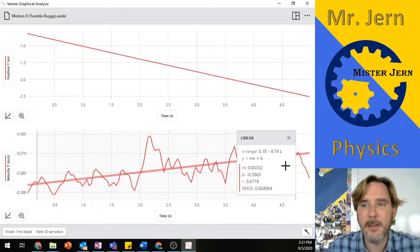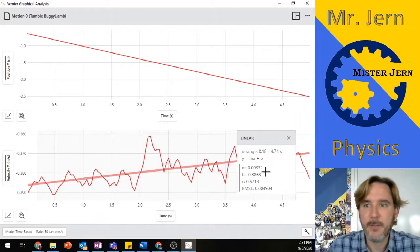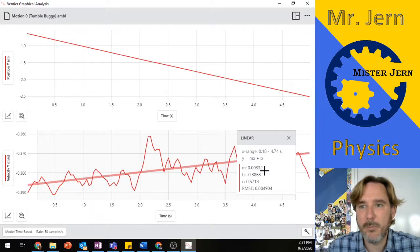Let's actually take a look what's going on here. It tells me my x range, 0.18 to 4.74 seconds. That's telling me how much I highlighted, between 0.18 and 4.74 seconds. Then it says y equals mx plus b. Now here we have our slope, and the slope here is a positive 0.003 meters per second per second.